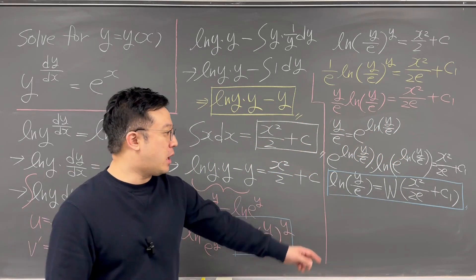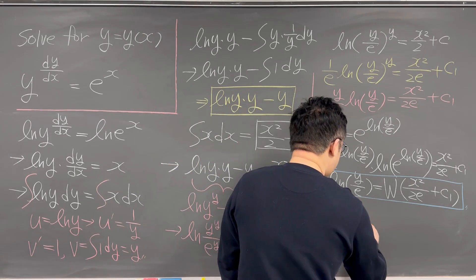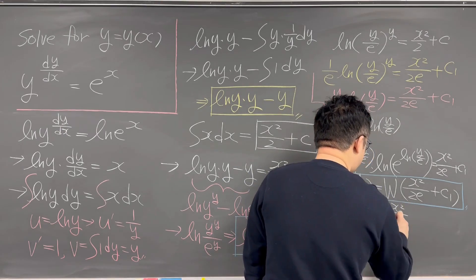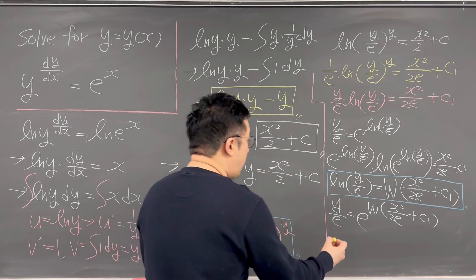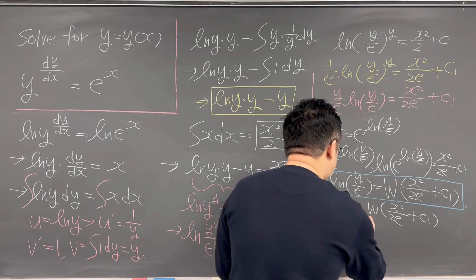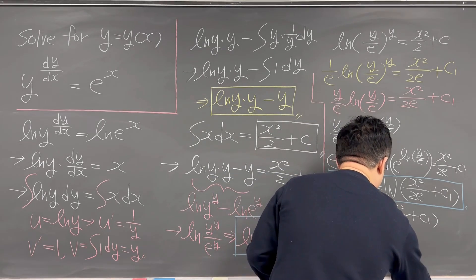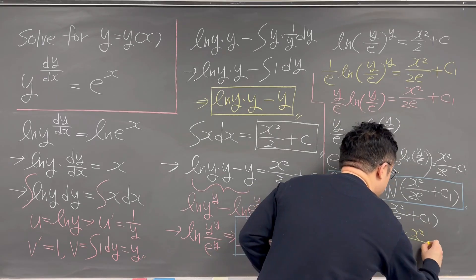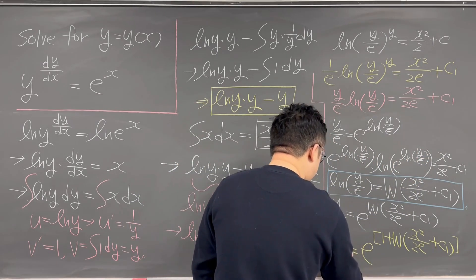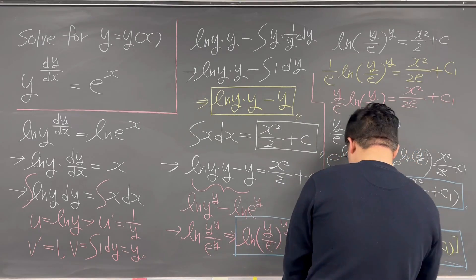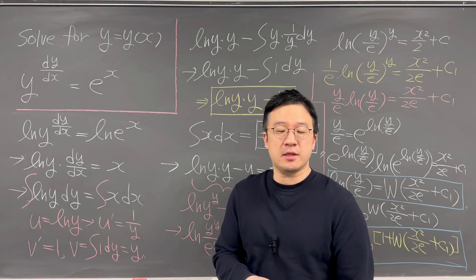Since we're solving for y as a function of x, we have y/e equals e to the power of W(x²/(2e) + c1). Therefore, the final answer is y equals e to the power of (1 plus Lambert W of (x²/(2e) + c1)). This is the complete solution for this interesting differential equation using the Lambert W function. I'll be back with more questions like this soon.